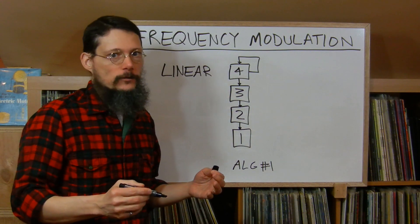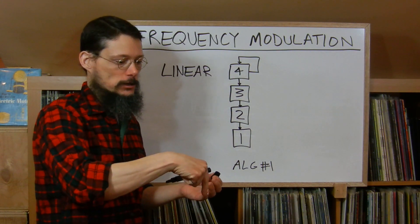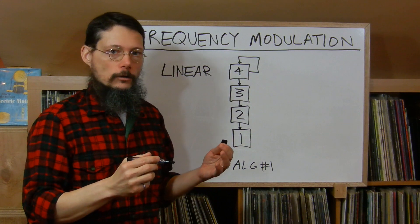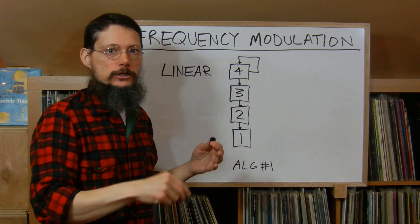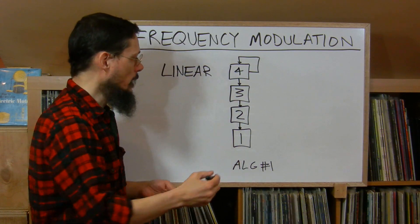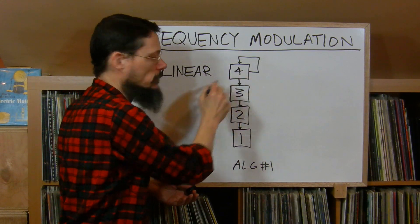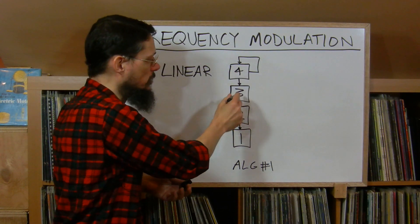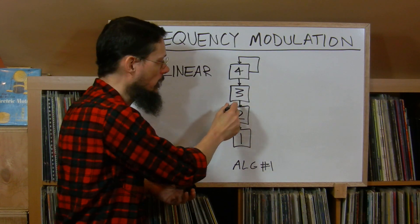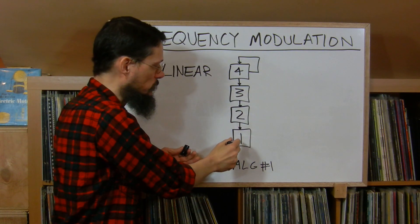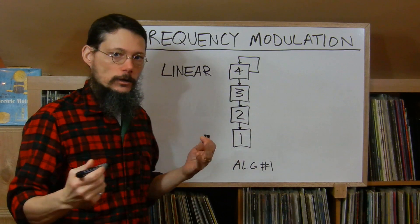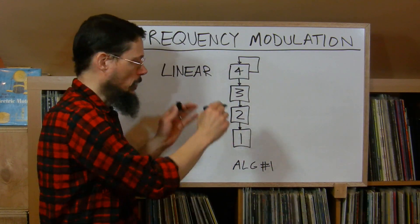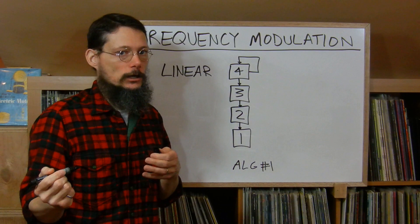An operator is just a sine wave oscillator, usually pitched to whatever key you're pressing down, sometimes an octave up or down. The lines in the diagram show how the frequency modulation is connected between the different operators. Sine wave oscillator 4 modulates itself — a feedback loop. Oscillator 4 modulates oscillator 3, 3 modulates 2, and 2 modulates 1. Operator 1's output is what you hear on the audio output. The rest are internal to the synth only and are silent.